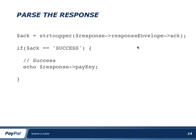Once I get my response, I can parse through it by calling different objects inside the response to pull out values. In this example, I'm pulling out the acknowledgement code from the response envelope, setting it to uppercase for comparison, and if it's successful, I display the pay key returned in the response.